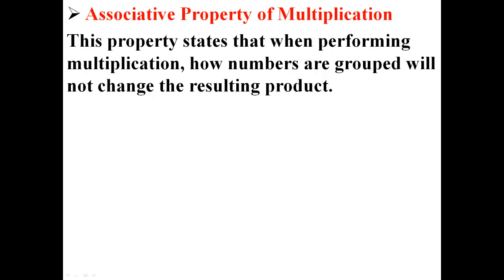The associative property of multiplication states that when performing multiplication, how numbers are grouped will not change the resulting product.